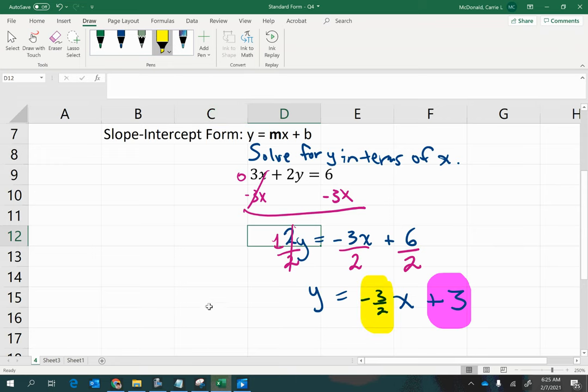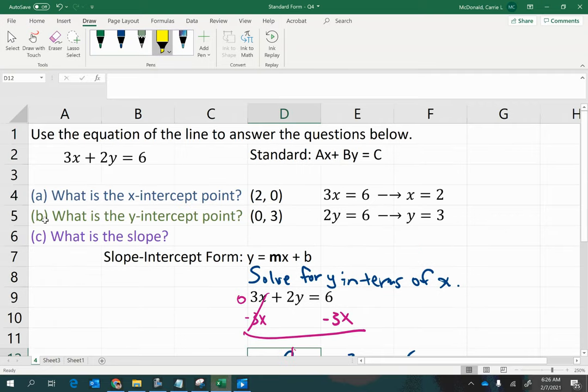All right, so that's not so bad. In fact, you could have just done that to answer both parts c and b, and then just do what we did with plugging in zero to find the x-intercept. That's another strategy.